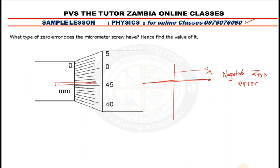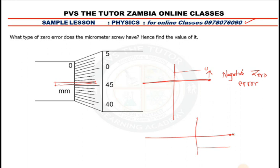But if this is the line demarcating there — it's a line from the sleeve to the thimble — and the zero reading is below this point, zero is below, then this is a positive zero error.